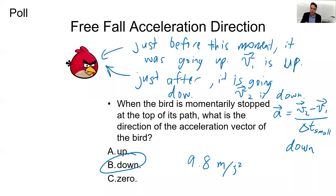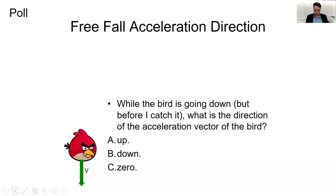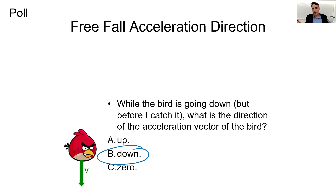The last question: as the bird is on its way down, is the acceleration vector A) up, B) down, or C) zero? It was B every time. This is the key idea of free fall — down, down, down. There are no forces on the angry bird except gravity, which pulls it down. So it accelerates downward at 9.8 m/s² the entire time.